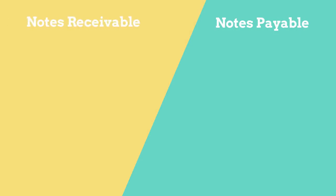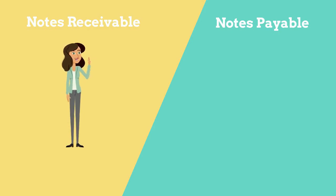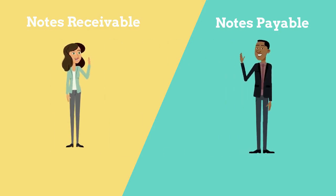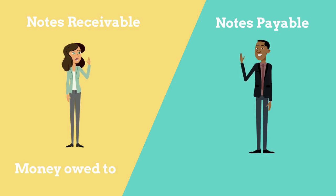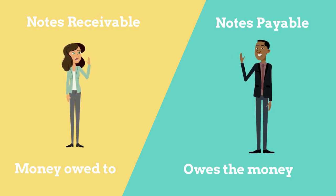Notes payable — we've talked about notes receivable before; they are the opposite sides of the same coin. If you have a note receivable on your books, someone else has a note payable on theirs. With notes receivable we were the one the money was owed to; with notes payable we are the ones that owe the money. Always remember who you are recording the transactions for — that determines whether you record a notes receivable or a notes payable.